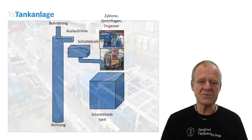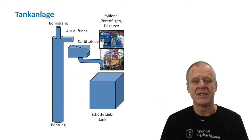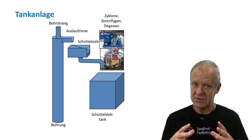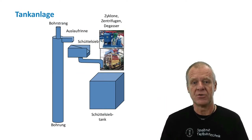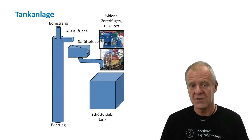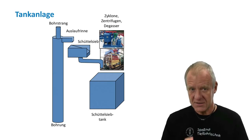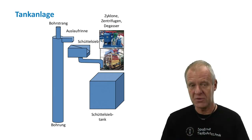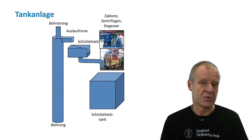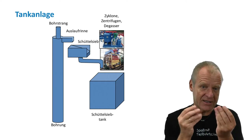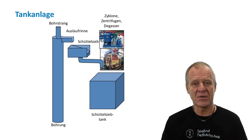The mud from the shakers moves into the sand trap pits. Here, all the heavy grains sink to the bottom. Samples can be taken here and the mud engineer finds out if there are too many fine particles in the mud, or small gas residues or gas bubbles that need to be removed.